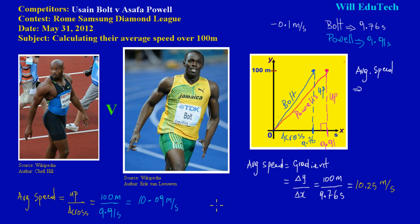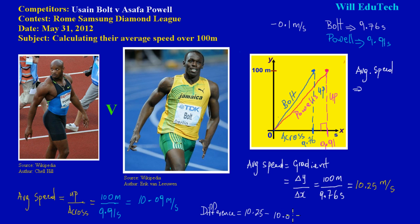By comparison, Bolt is clearly running more meters per second than Asafa. Let's make a quick comparison — how much faster is Bolt in terms of average speed? Simply find the difference: 10.25 minus 10.09 equals approximately 0.16 meters per second. So on average, Bolt is traveling 0.16 meters per second faster than Powell in today's Samsung Diamond League in Rome.